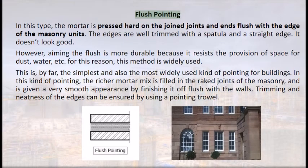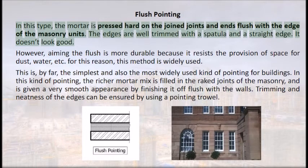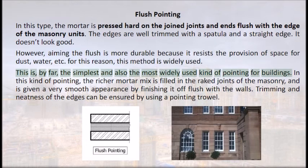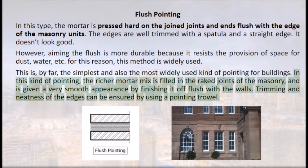Flush pointing: the mortar is pressed hard into the joints and ends flush with the edge of the masonry units. Edges are trimmed with a spatula and straight edge. Though it doesn't look as good, flush pointing is more durable because it resists providing space for dust, water, etc. It is the simplest and most widely used kind of pointing. In flush pointing, a richer mortar mix is filled in the rake joints and finished flush with the walls; trimming and neatness of edges is ensured by using a pointing trowel.